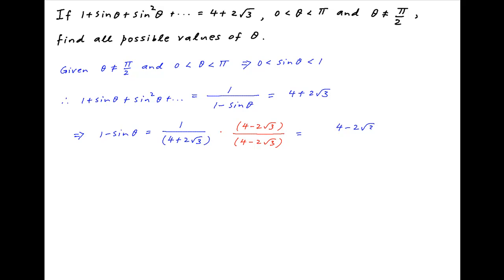So we get 4 - 2√3 in the numerator and the denominator we have 4² - (2√3)². This simplifies to (4 - 2√3)/(16 - 12) in the denominator. This is equal to (2 - √3)/2.